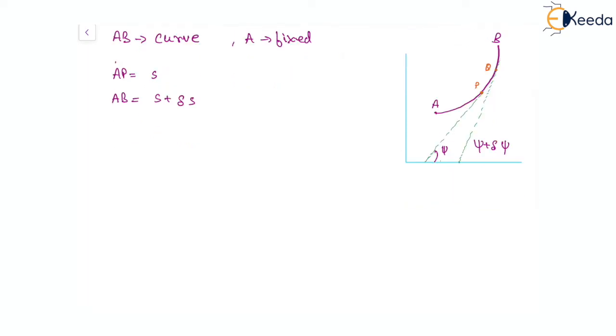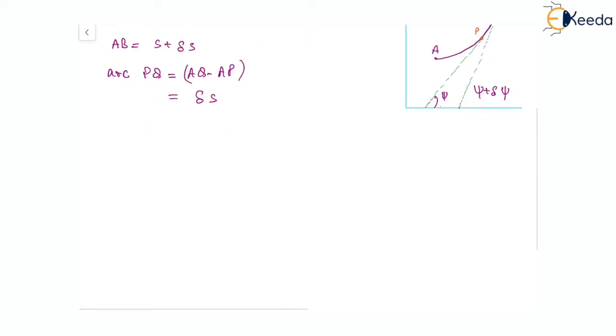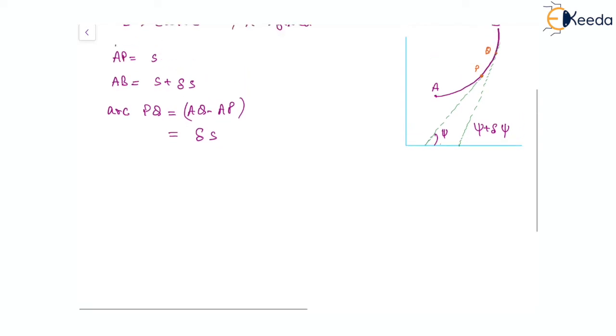The arc length PQ equals AQ minus AP, which is simply del s. With this information, we can see that in moving from point P on the curve to point Q, the change in arc length is del s and the change in bending is del psi.